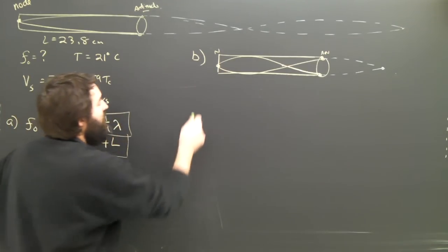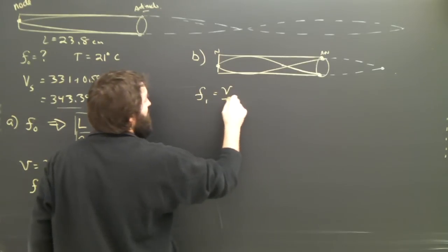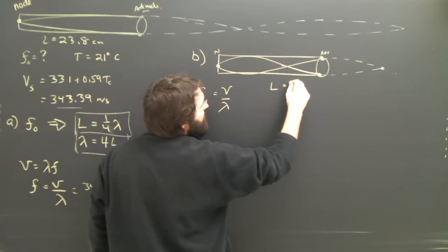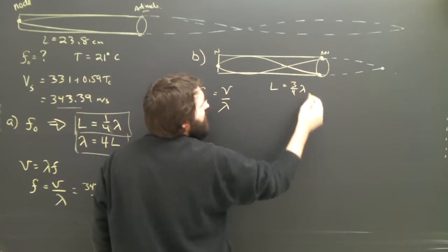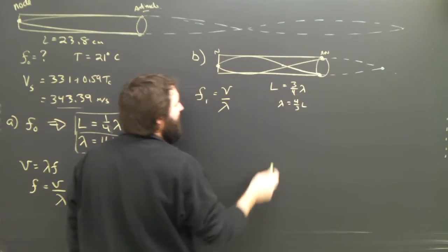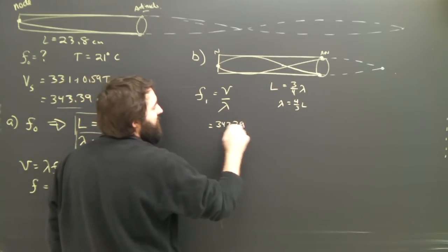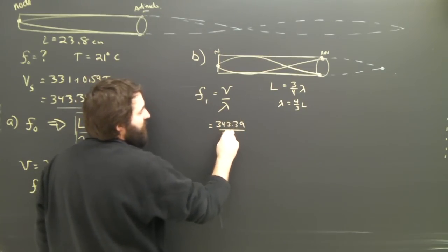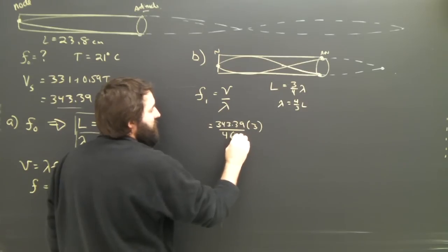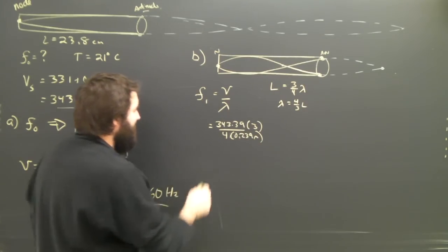So what is the frequency of the first harmonic? Well, it's still going to be V over lambda. But this time, the length of the tube is three quarters times lambda, which means that lambda is four thirds L. So dumping that in, I get 343.39 divided by four L thirds on the bottom. It flips around at the top. That L though is 0.238 meters still. The flute hasn't changed length.